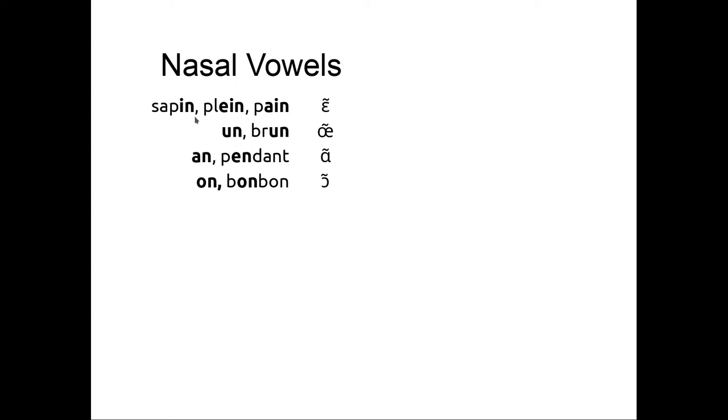The first one can be written with IN, EIN or AIN. So we have sapin, plein, pain. The second one can be written with UN, like un or brun. The third one can be written with AN or EN, like an, pendant. And the fourth one can be written with ON, like on, bonbon. There are a lot of videos that give tricks for pronouncing nasal vowels.